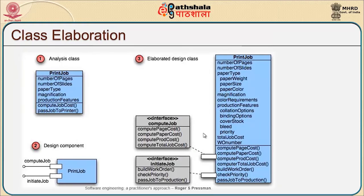In class elaboration, when we analyzed the class of printing a job, we looked at several attributes like number of pages, number of slides, paper type, magnification, and so on. The classes associated with the print job include compute job cost and pass job to printer. When converted to a design component, it has a component called print job, which has to do an initiate job and a compute job — these are the two jobs associated with the print job as a component.